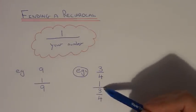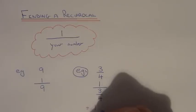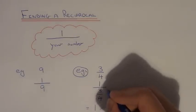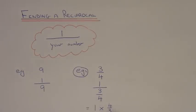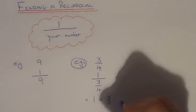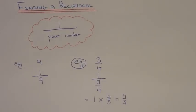Since we're dividing by a fraction you can flip the fraction upside down and change the divide to a times. So 1 divided by 3 quarters is the same as saying 1 times 4 thirds. And we get an answer of 4 thirds because we're just multiplying by 1.